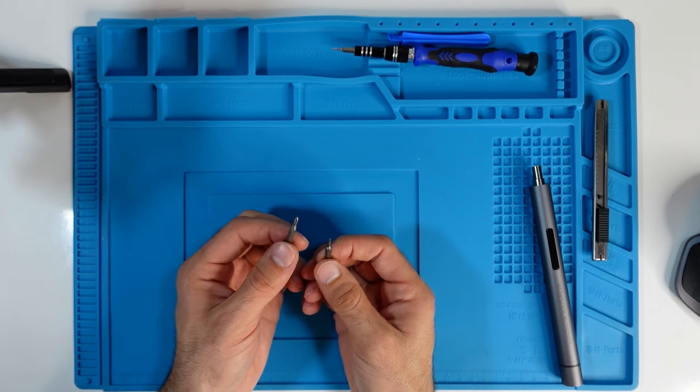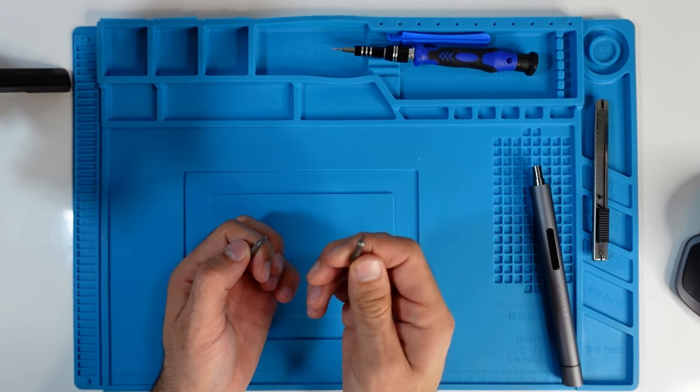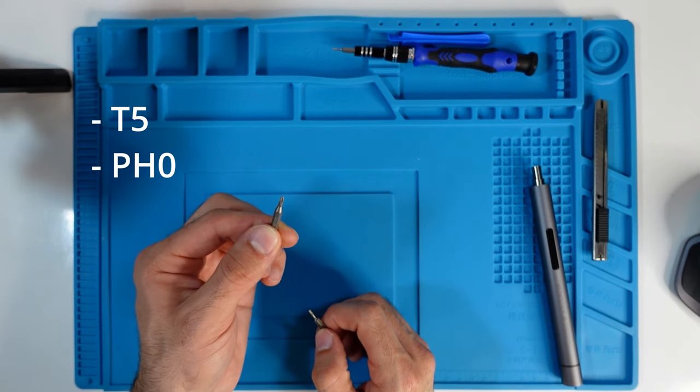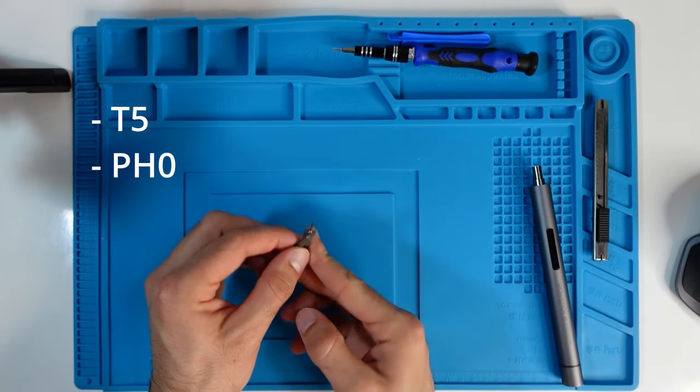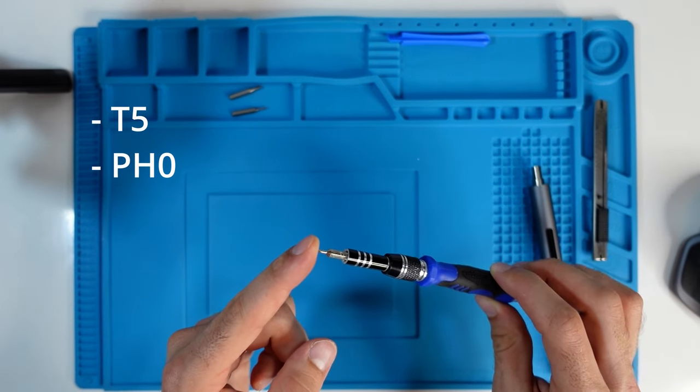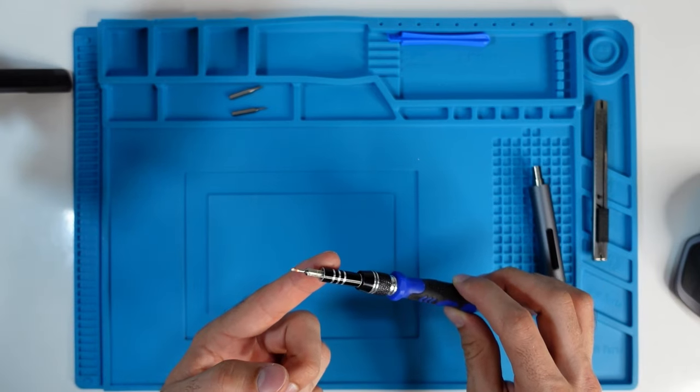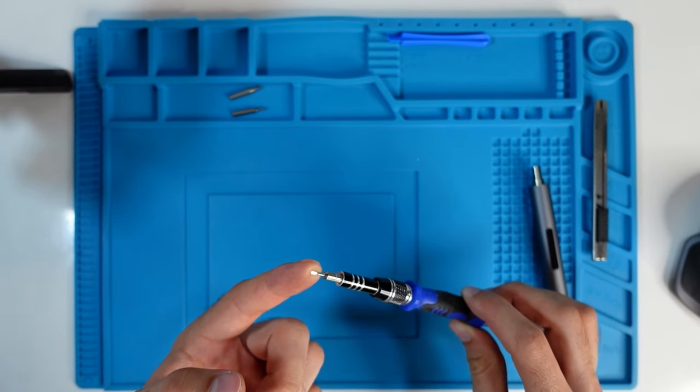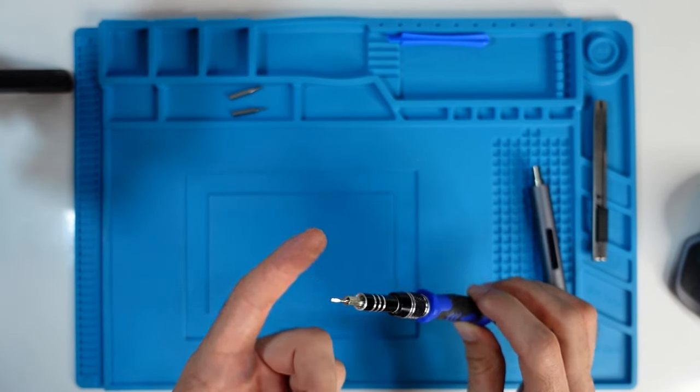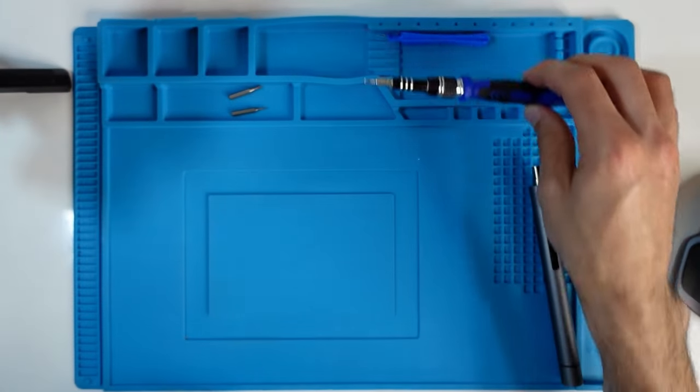You will need in total three bits: one is a Torx T5, one is a Phillips H0, and the other one is a very tiny flathead screwdriver. In reality you'll need a cross, but this is the only one that could fit in the cross screw that I will show you.